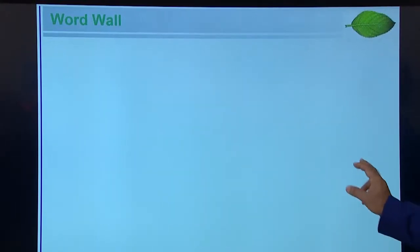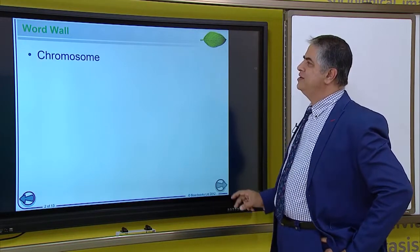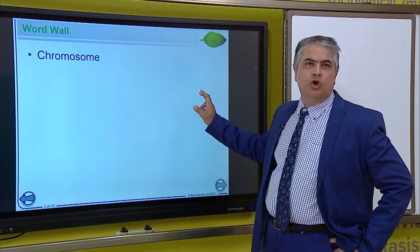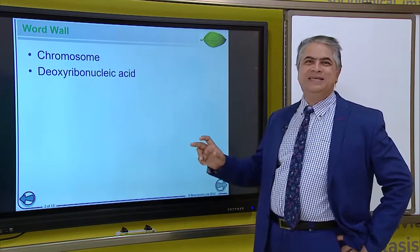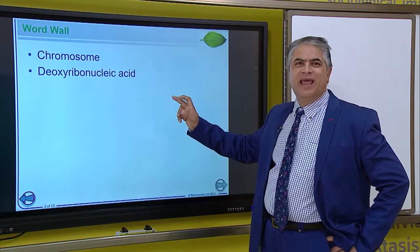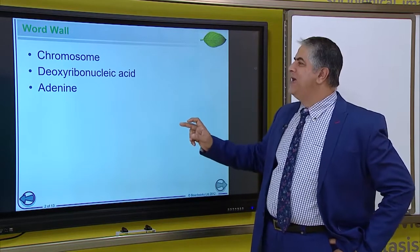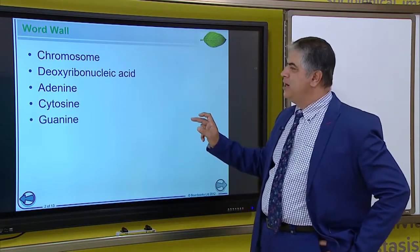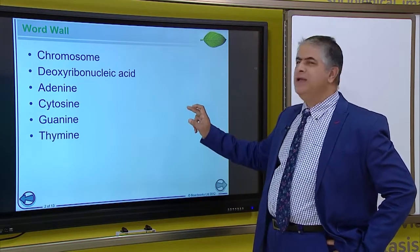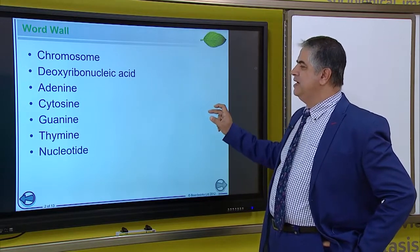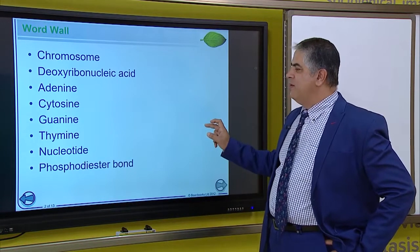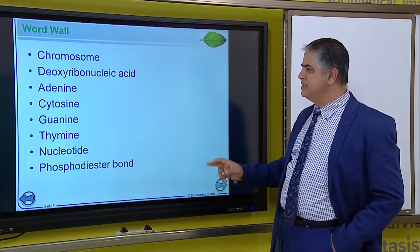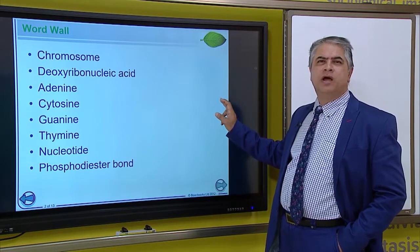With that, I'd like to go through a few words that you may have difficulty with. For the first word, please say these words three times after me. Chromosome. Deoxyribonucleic acid. Adenine. Cytosine. Guanine. Thymine. Nucleotide. Phosphodiester bond. So those are the words that we are going to come across in this lesson. And I hope you will be able to pronounce these words properly.